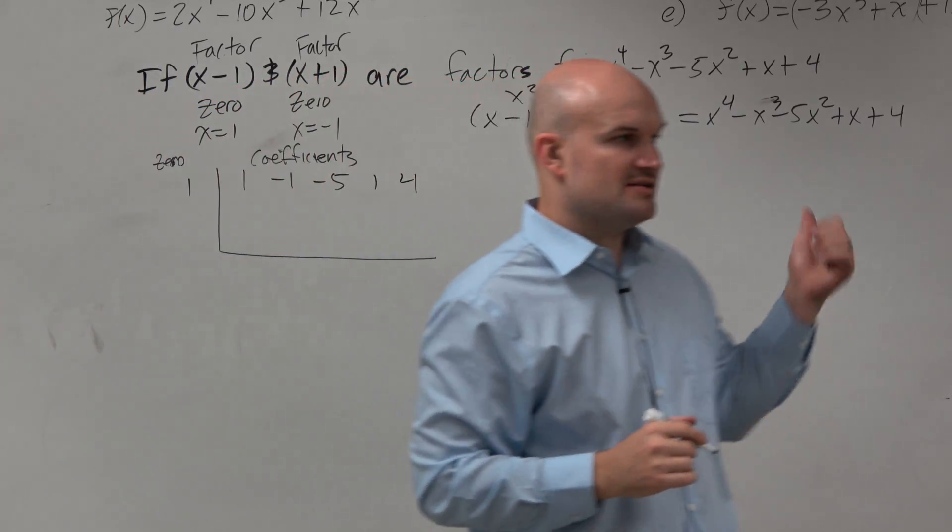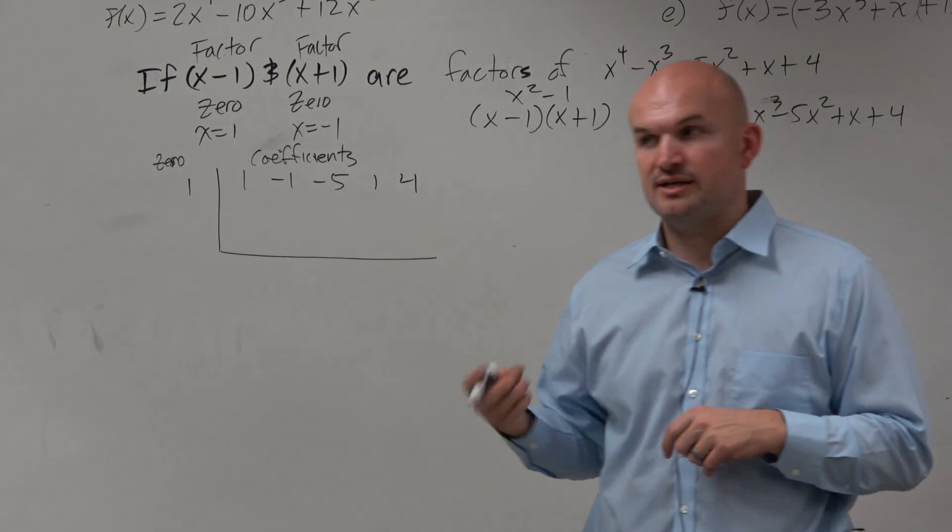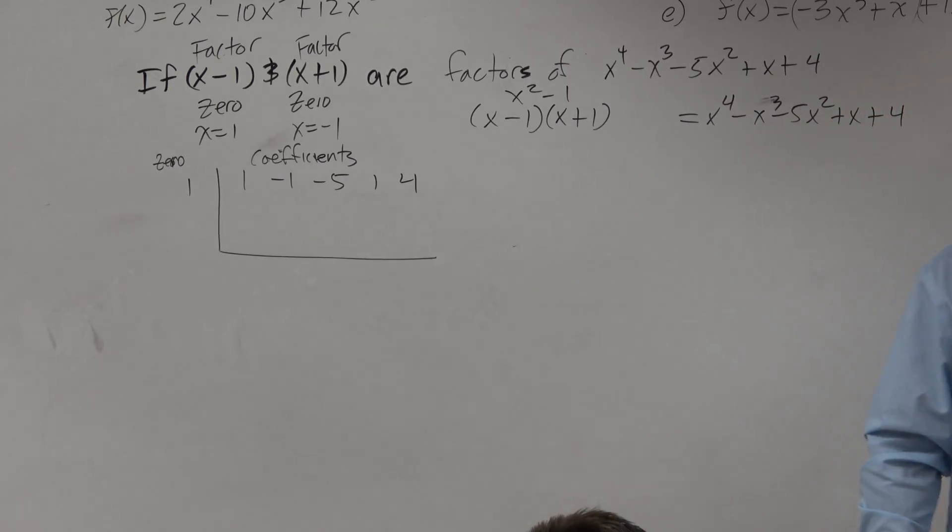Remember, if you have a missing term, like a 0 x squared or no x, just remember to use a 0 in place of that, OK?